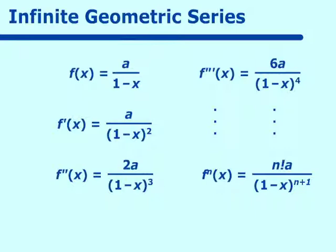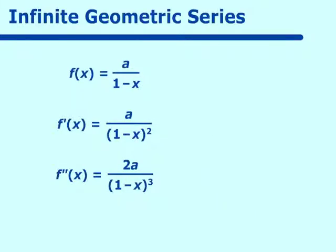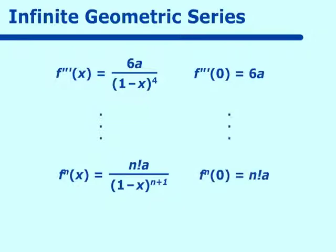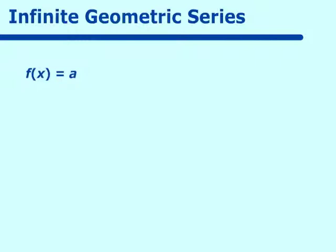How does this convert into our Taylor polynomial? We've centered it around 0, so we substitute zeros in. F(0) is equal to A. F prime of 0 is equal to A. F double prime of 0 is equal to 2A. F triple prime of 0 is equal to 6A. And f to the nth derivative at 0 equals n factorial times A. Putting this into our Taylor series, we get f(x) equal to A plus Ax plus 2A x squared over 2 factorial plus 6A x cubed over 3 factorial, plus n factorial A x to the n over n factorial.